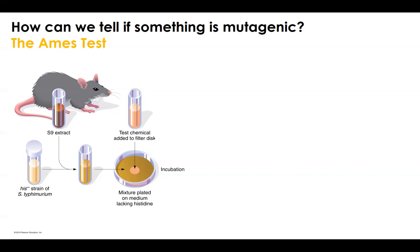While selection pressures do not cause mutations, there are sometimes chemicals that do. One of the things we talked about in our previous video was ethidium bromide, and I mentioned compounds like EMS that will cause mutations. So the idea is that there are some chemicals that do cause mutations, and what we're going to be talking about is how do we tell what types of chemicals cause mutations?